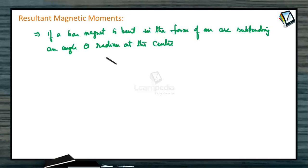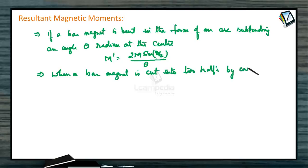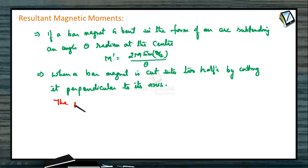If a bar magnet is bent in the form of an arc subtending an angle theta radians at the centre, the new magnetic moment will be 2M sin(θ/2) divided by θ. When a bar magnet is cut into two halves by cutting it perpendicular to its axis, remember: the pole strength does not change, but the magnetic moment is halved.